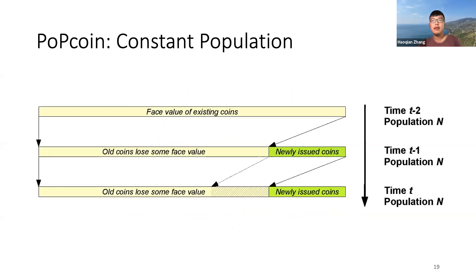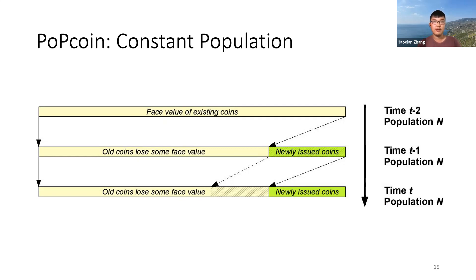This is another way to illustrate the PopCoin monetary policy. When we have a constant population, the money supply is constant as well, represented by the length of the horizontal axis. The existing coins at t-2 will lose their face value at t-1, so that room is made for the newly issued basic income, keeping the supply the same.